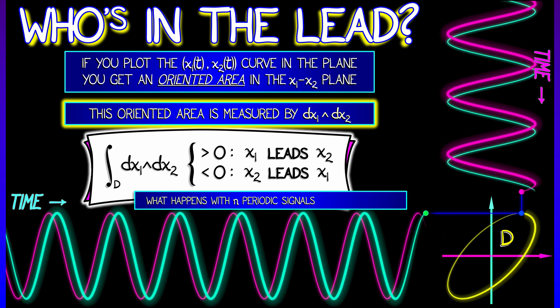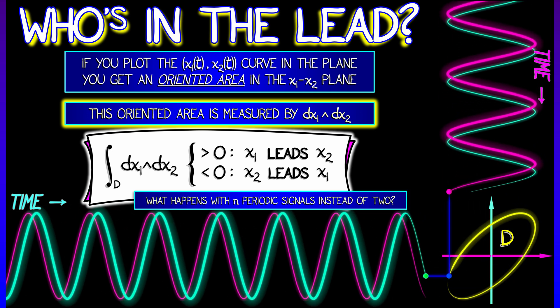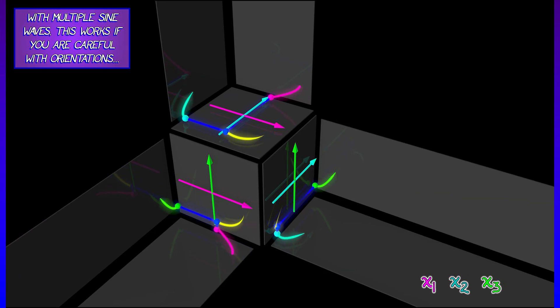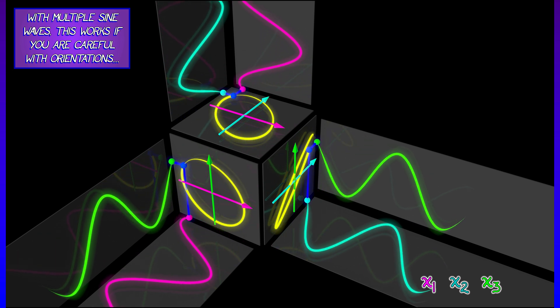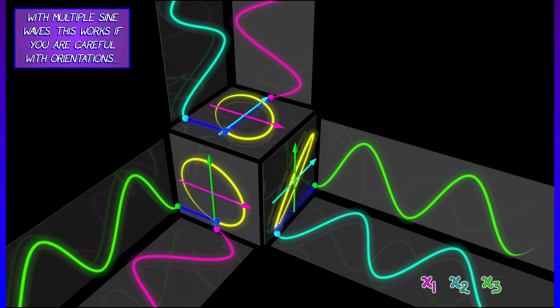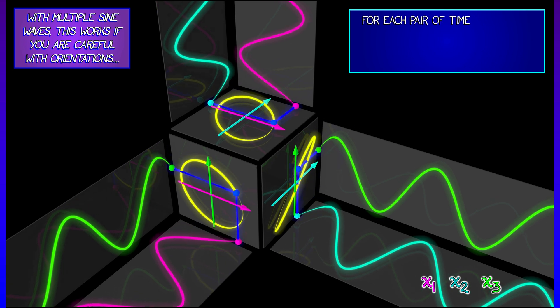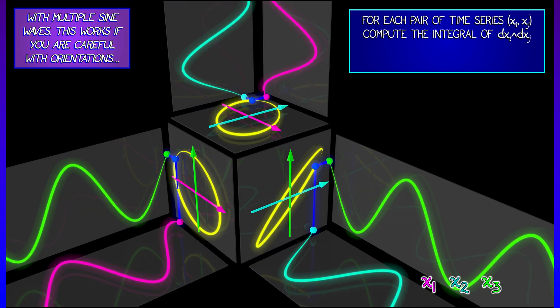Okay, now what happens if instead of two signals, you have three signals, four signals, n signals? You can repeat the same analysis. Let's say that we have multiple sine waves, then what we're going to get is multiple ellipses in the different coordinate planes.